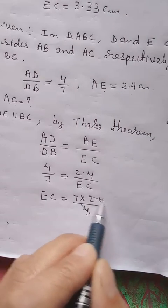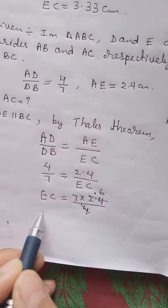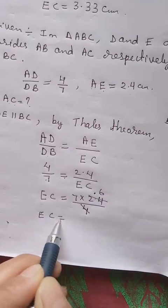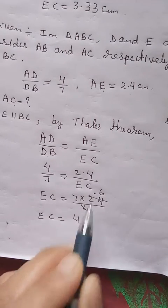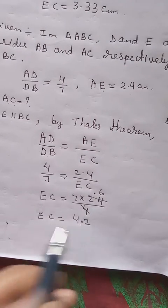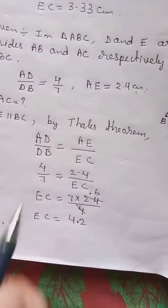Here 4 and 2.4 we can cancel. 4, 6. So EC will be equal to 7 into 6, 42. We have one decimal, we can put there. The unit already given from here to be centimeters.